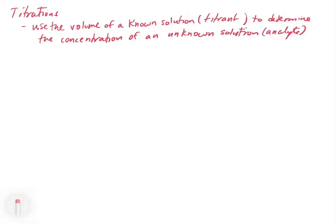In this video we're going to look at titrations. This is the final version of quantitative analysis. A titration is where you use the volume of a known solution - meaning the concentration is known very precisely. We call that solution the titrant, and it's used to determine the concentration of an unknown solution, which we call the analyte.